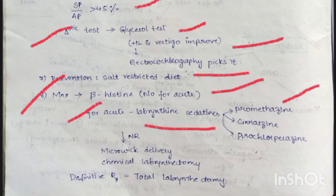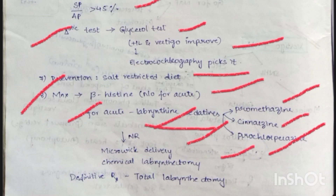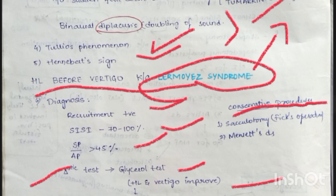If non-responsive, use intratympanic delivery or chemical labyrinthectomy. Definitive treatment is total labyrinthectomy. Conservative procedures are sacculotomy, Fick operation, and Meniett device.